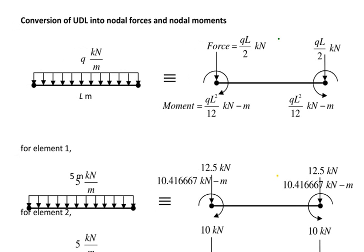For element 2, the load is the same at 5 kN/m but the length is 4 meters. Applying QL by 2: 5 into 4 divided by 2 gives 10 kN at node 2 and node 3. For the moment, QL² divided by 12 with L=4 gives 6.6 kN·m at both nodes. Element 1 connects nodes 1 to 2, and element 2 connects nodes 2 to 3.